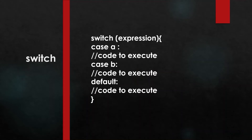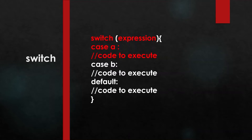Apart from if and else, we have a switch statement for conditions in JavaScript. The syntax starts with the switch keyword, then the expression in brackets, then opening and closing curly brackets. You write different possible cases for the value of the expression. Start with the case keyword, then the expected value, a colon, then the code to execute. After that you must write the break keyword after every case.